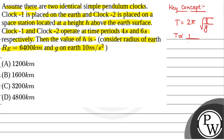From here, we can see the time period of a pendulum clock is inversely proportional to g, and g — that is, acceleration due to gravity at a height h — is basically g effective.